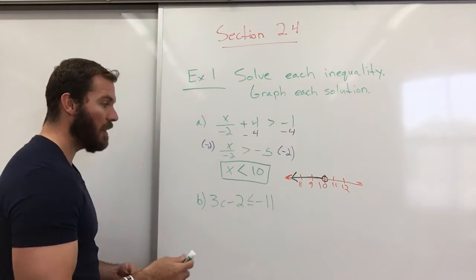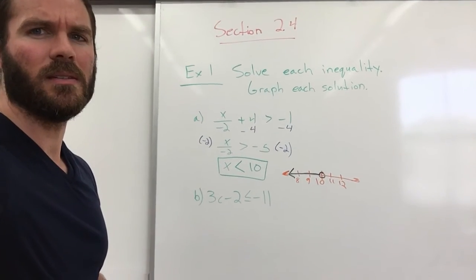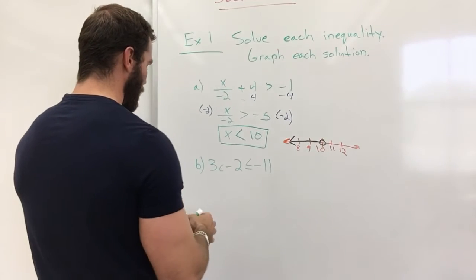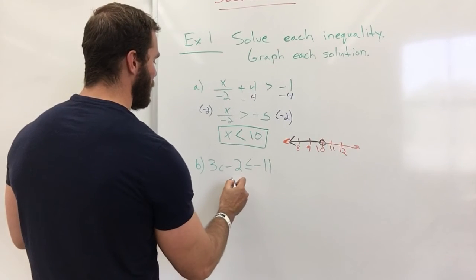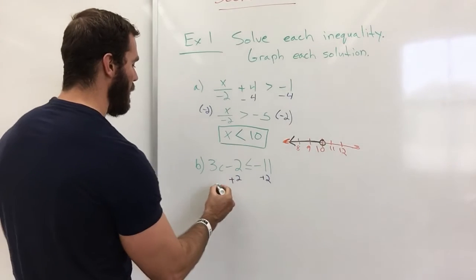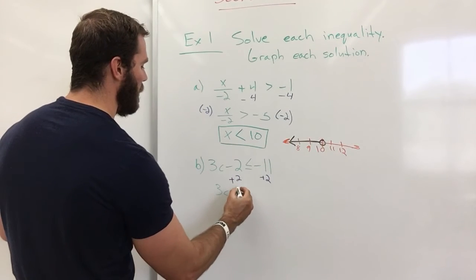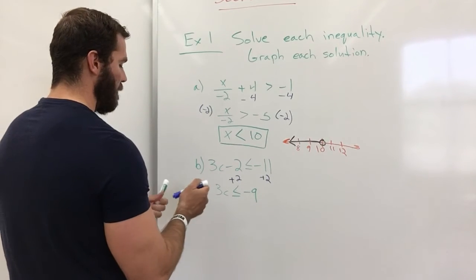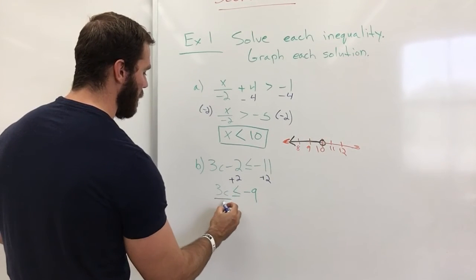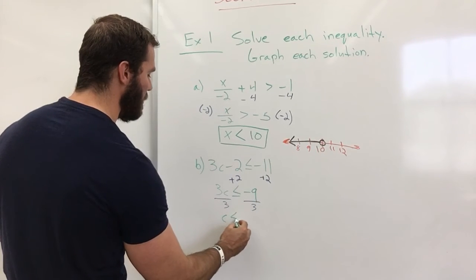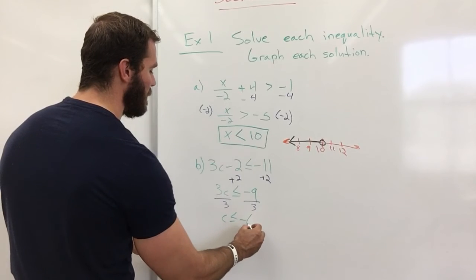Part B, hopefully you can see it. We will first add 2 to both sides. And now we have 3c is less than or equal to a negative 9. Divide by 3. So c is less than or equal to a negative 6.